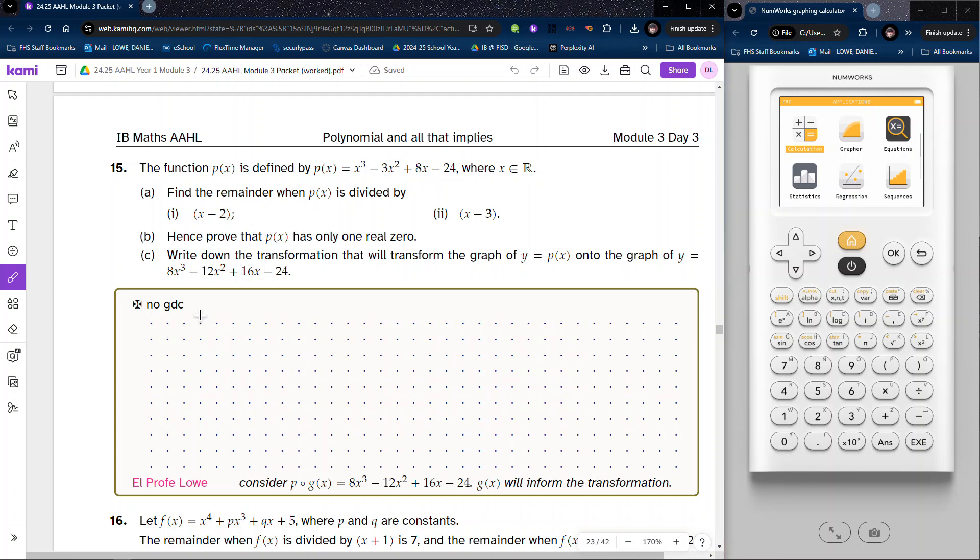Using the remainder theorem, all we have to do for part a is to say what is P of 2. P of 2 is going to be equal to 8 minus 12 plus 16 minus 24, and if we consider that we have negative 12 minus 24 is negative 36 plus 16 is going to be negative 20 plus another 8 is going to be negative 12.